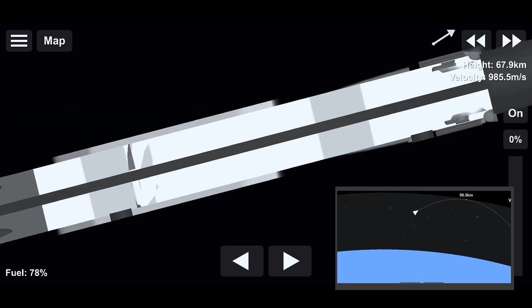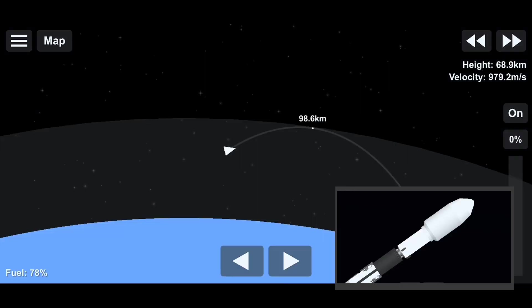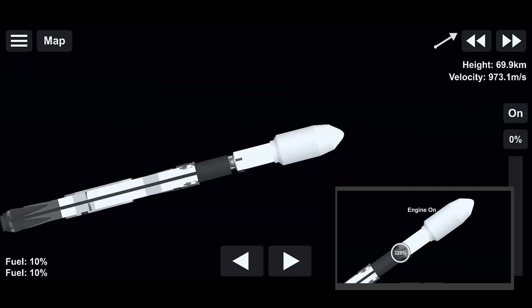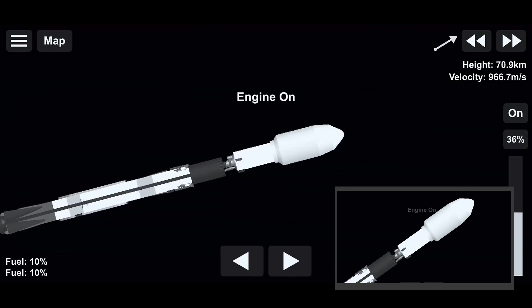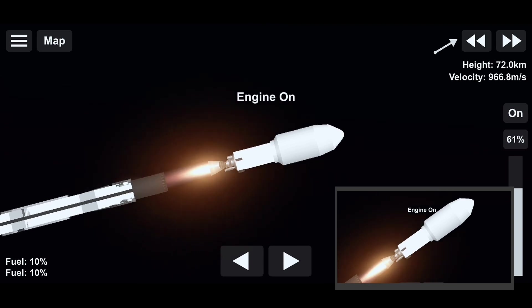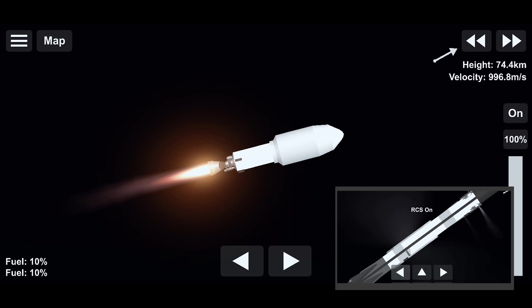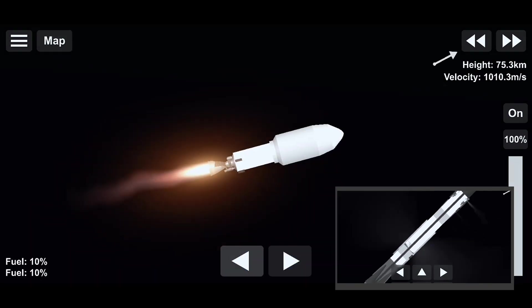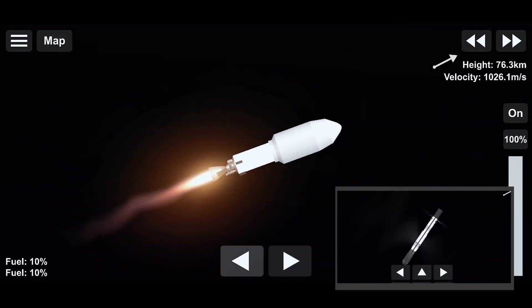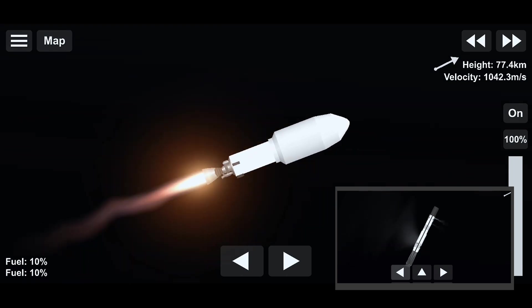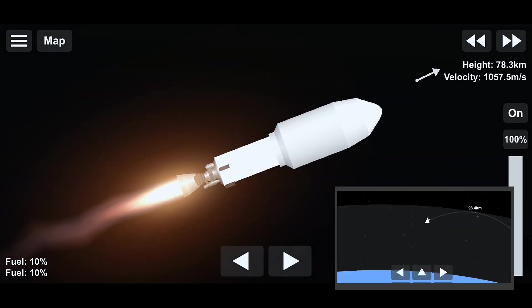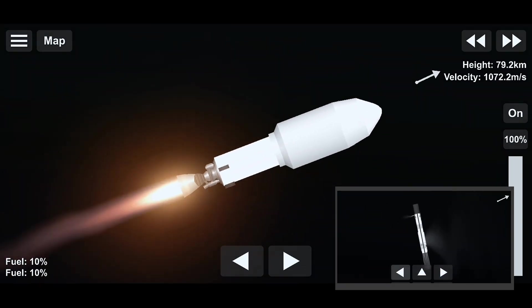SES-1, and we've got successful MVAC full power ignition. The view on the right shows the MVAC engine, the second stage now taking over carrying the Starlink and Black Sky satellites to orbit.